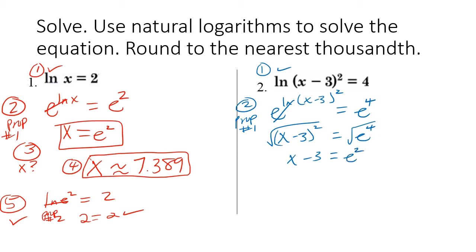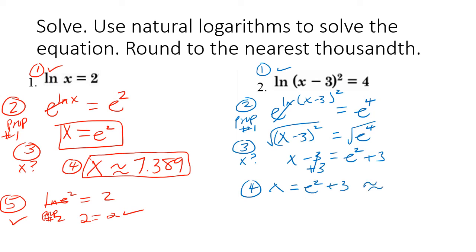We take the square root of both sides, leaving x minus three equals e squared — because the square root of e to the fourth is e squared, since we can make two groups of two e's. Step three: add three to both sides. The exact value is x equals e squared plus three. The approximate value is about 10.389.